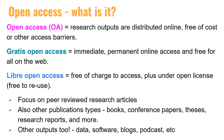The main focus of the open access movement is peer reviewed research literature. This is centered mainly on academic journals, whereas conventional non open access journals cover publishing costs through access tools such as subscriptions, site licenses or pay per view charges. Open access journals are characterized by funding models which do not require the reader to pay to read the journal's contents, or they rely on public funding.